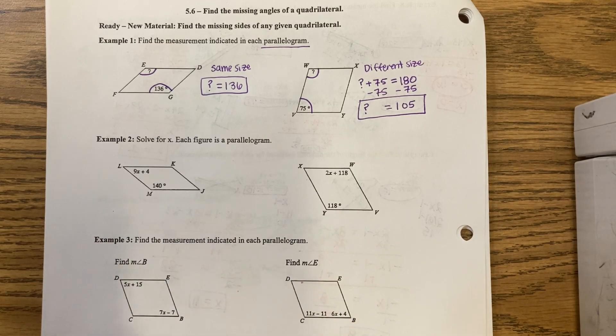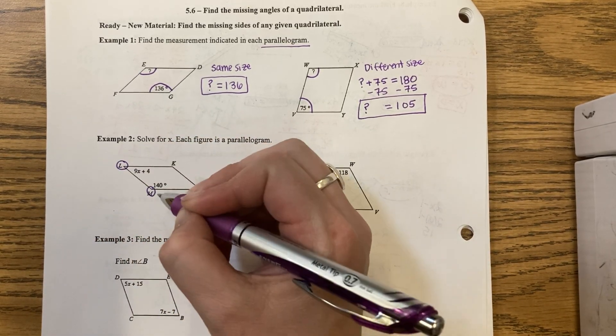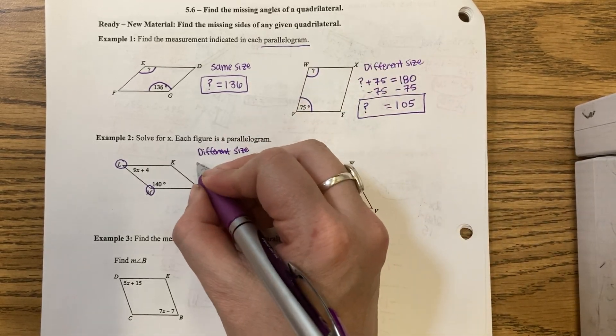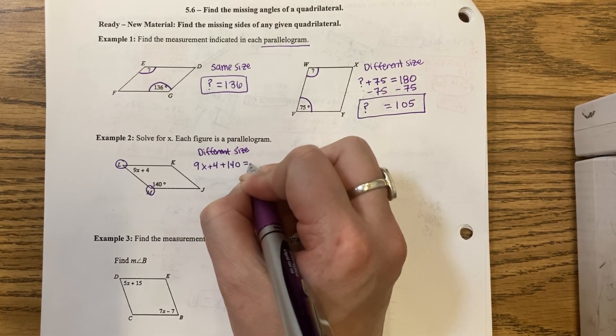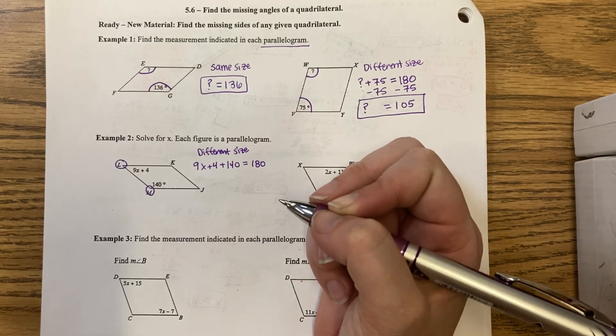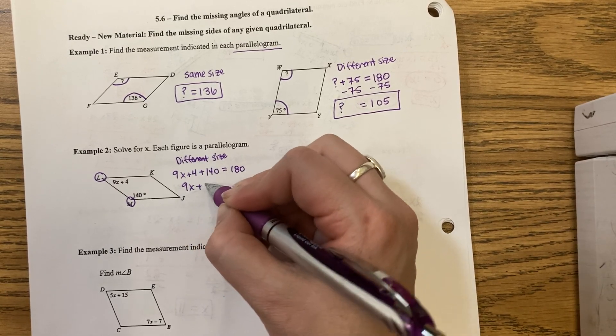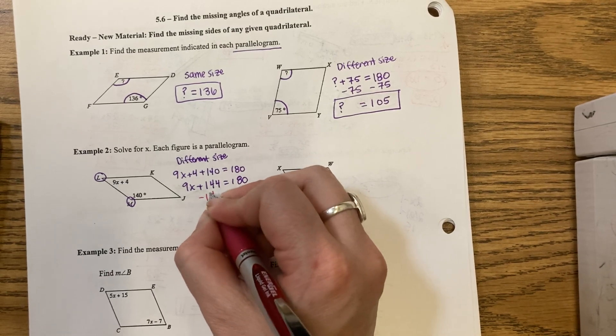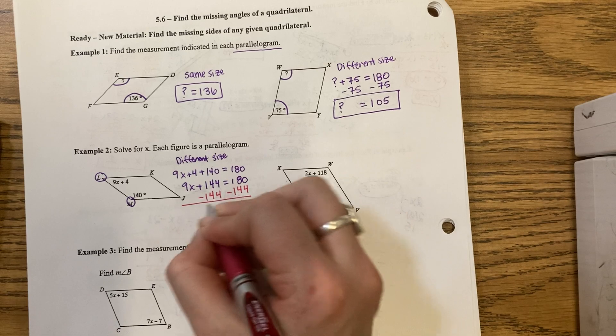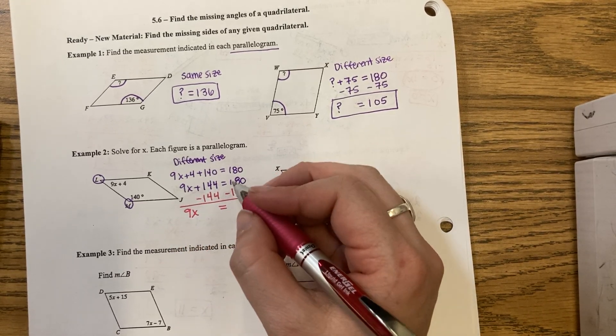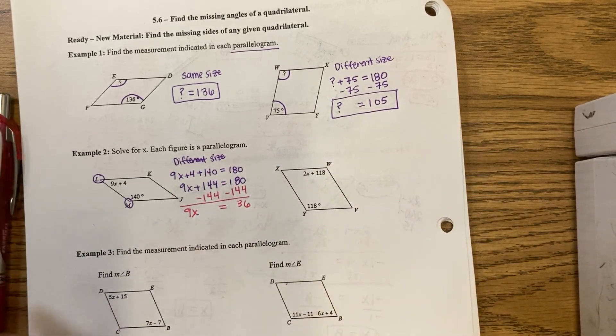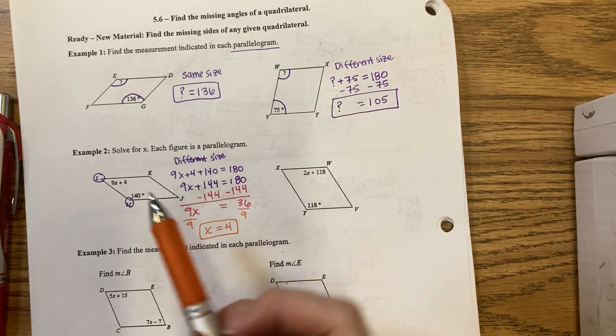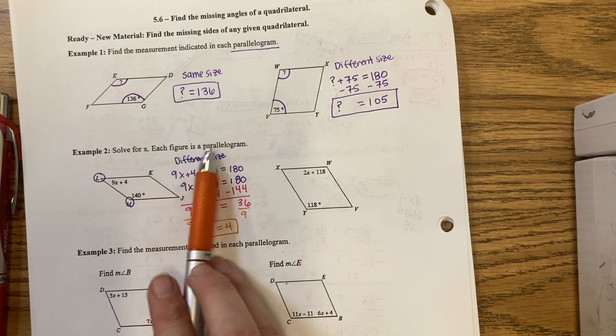Question 2. I am given angle L and M. They're different sizes. So I'm going to say that 9x plus 4 plus 140 should equal 180. 9x plus 4 and 140 make 144, minus 144. And then divide. They only want us to solve for x. So I found x equals 4.